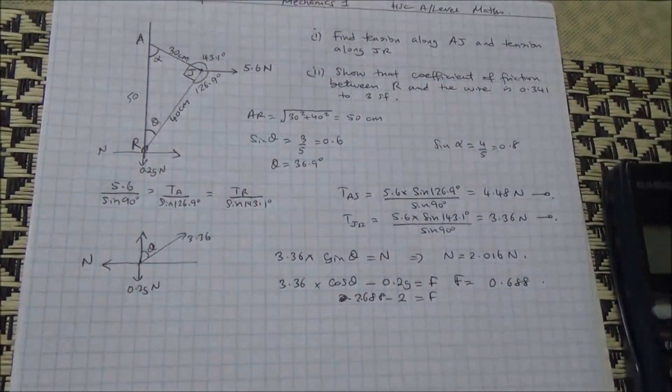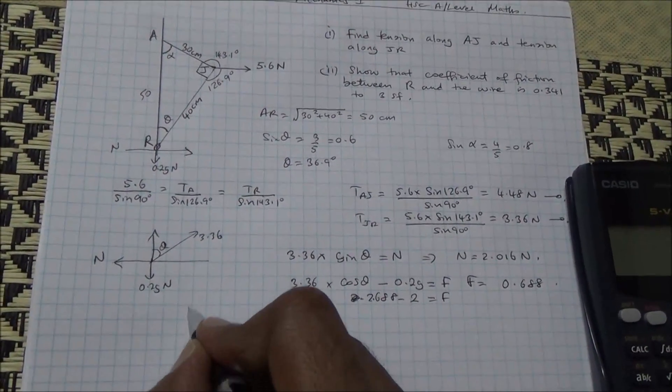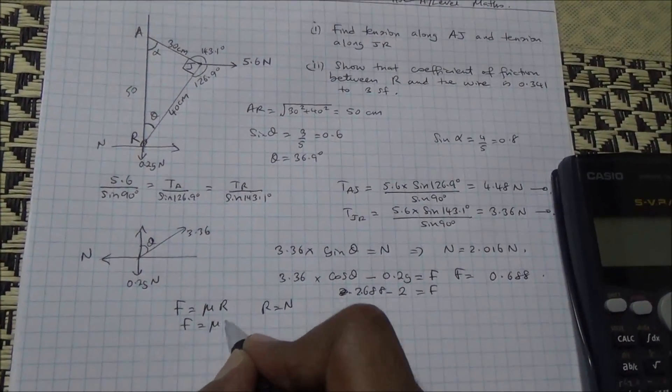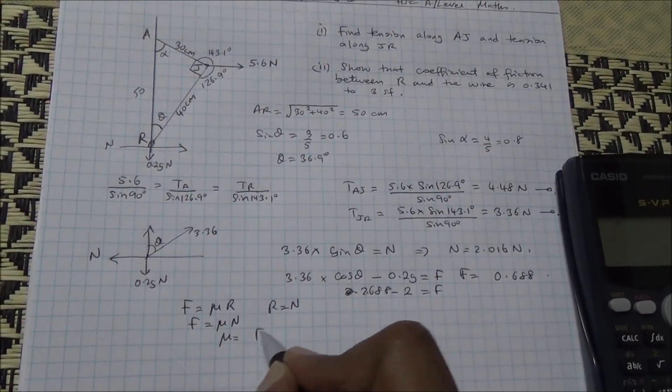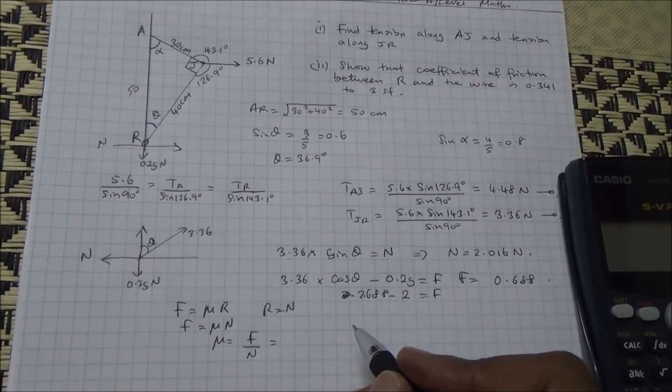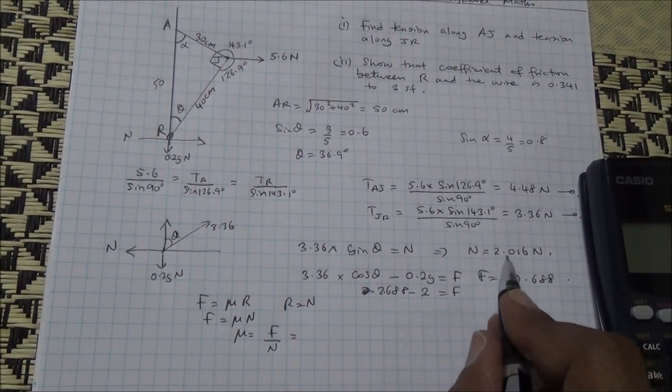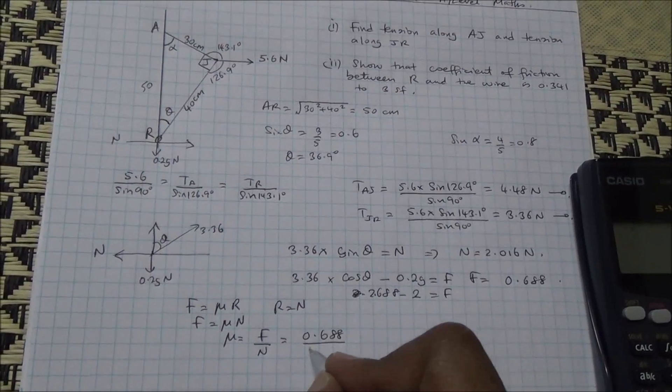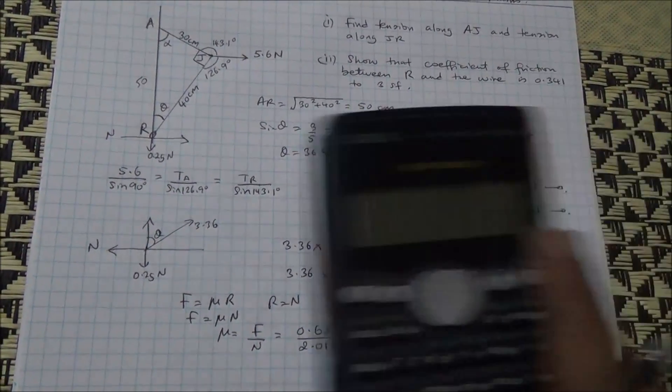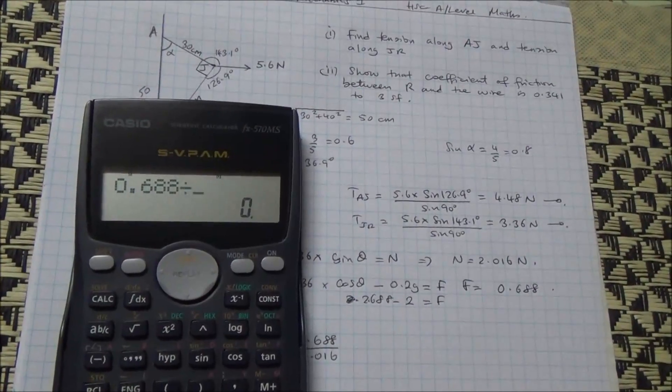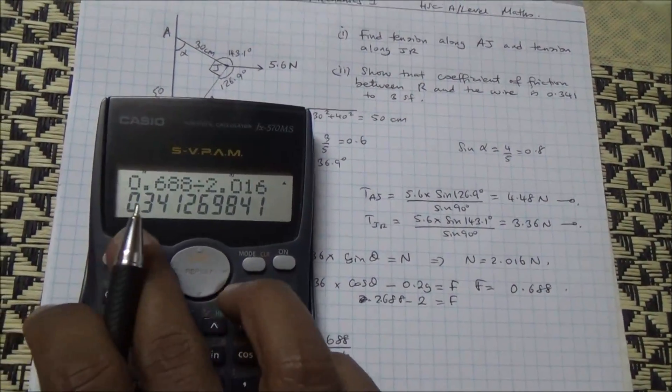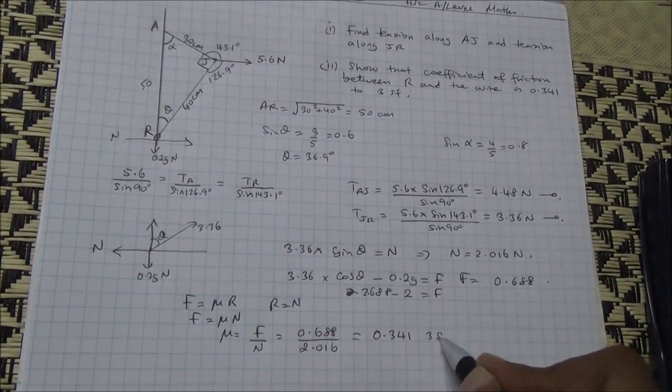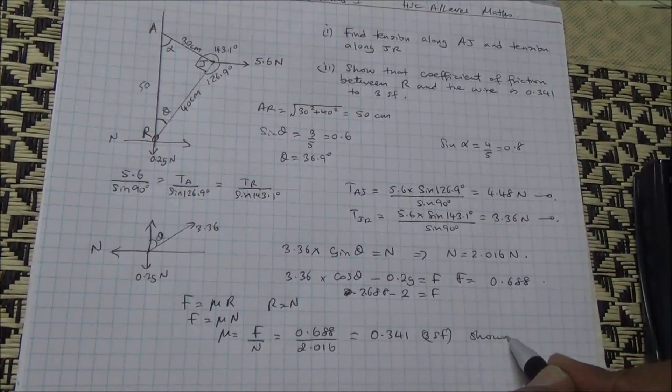Now what do we know as well? We know that the force is equal to mu R. And here R is equal to N. So the force is going to be mu N. Therefore, mu is going to be the force divided by N. And the force we found it to be 0.688 divided by N, 2.016. And it's going to give us 0.341 to 3 significant figures. And this has been shown.